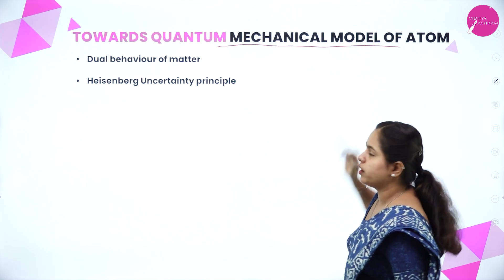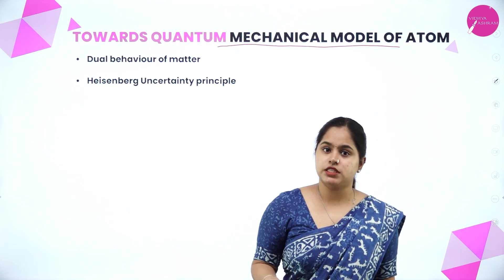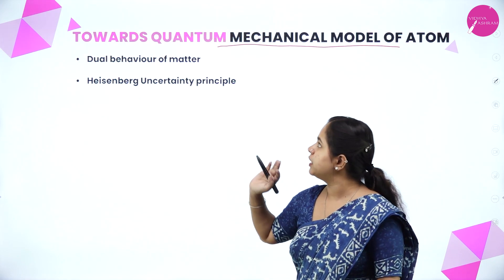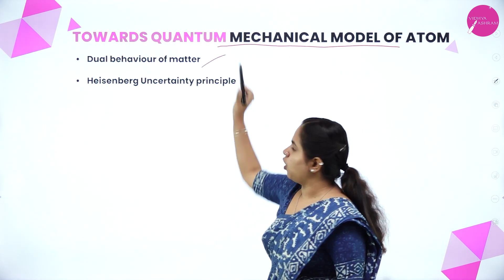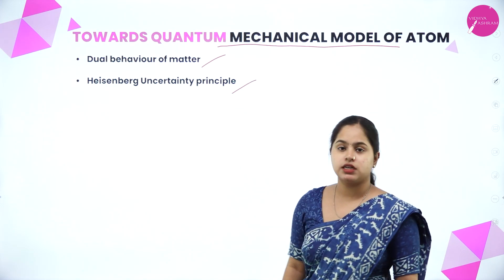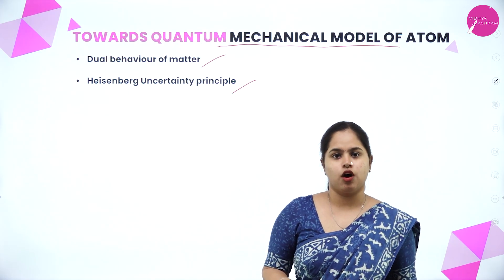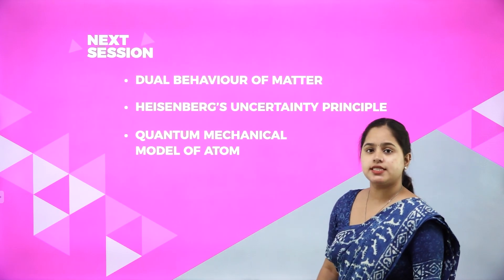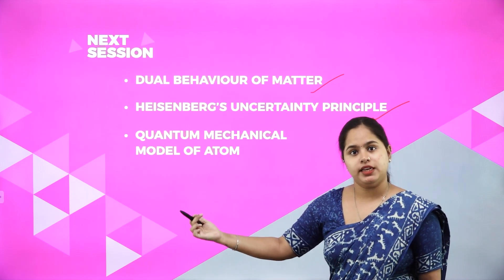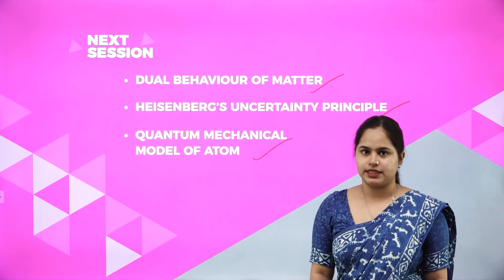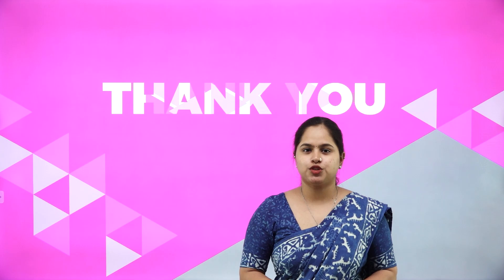These limitations of Bohr's model led to the quantum mechanical model of atom. In the next session we will be discussing dual behavior of matter, Heisenberg's uncertainty principle, and finally the quantum mechanical model of atom. I hope everything discussed in this class is clear. Thank you.